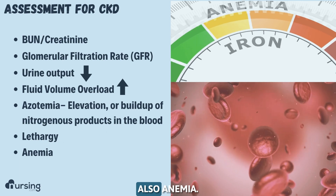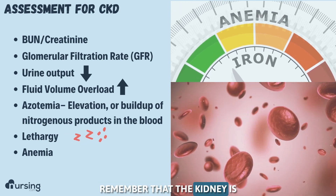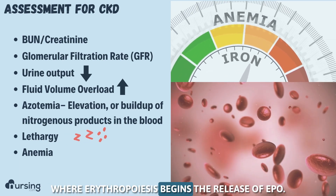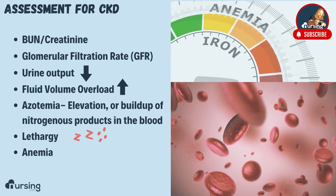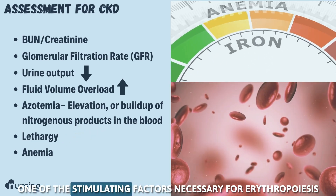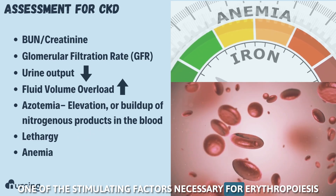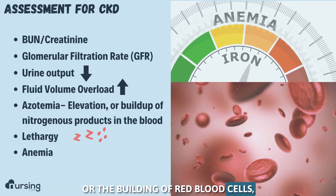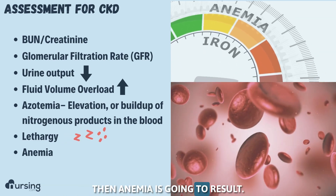Lethargy, and also anemia. Remember that the kidney is where erythropoiesis begins — the release of EPO. If you do not have this stimulating factor necessary for erythropoiesis, or the building of red blood cells, then anemia is going to result.